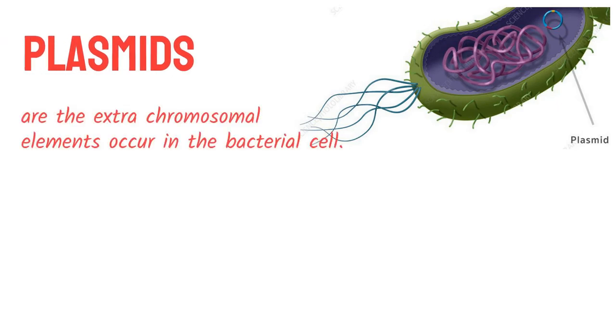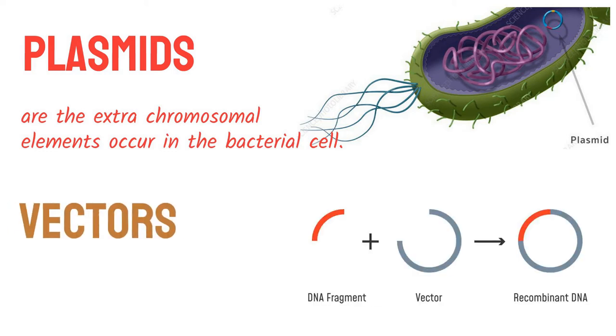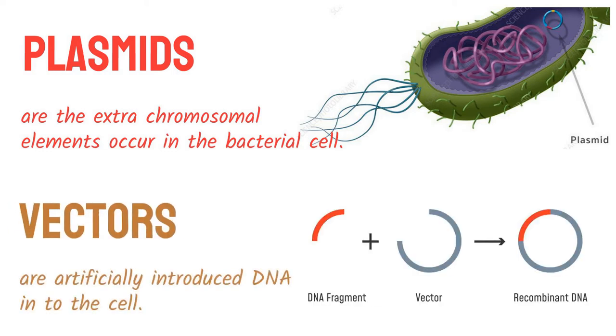Plasmids are the extra-chromosomal elements that occur in the bacterial cell. Vectors are artificially introduced DNA into the cell.